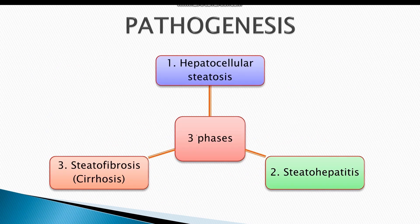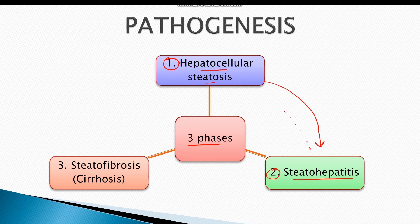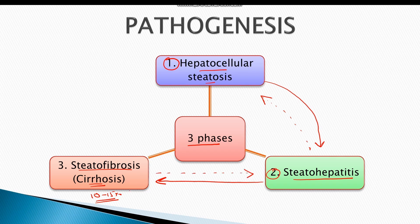Alcoholic liver disease occurs in three phases. The first stage is hepatocellular steatosis, which means accumulation of lipid inside the cells. Hepatocellular steatosis progresses into steatohepatitis, which can be regressed after abstinence from alcohol. Steatohepatitis further progresses into steatofibrosis or liver cirrhosis — almost 10 to 15% of cases progress to liver cirrhosis. In the early stages of steatofibrosis, abstinence can cause regression, but in most cases the disease progresses into end stage liver disease.